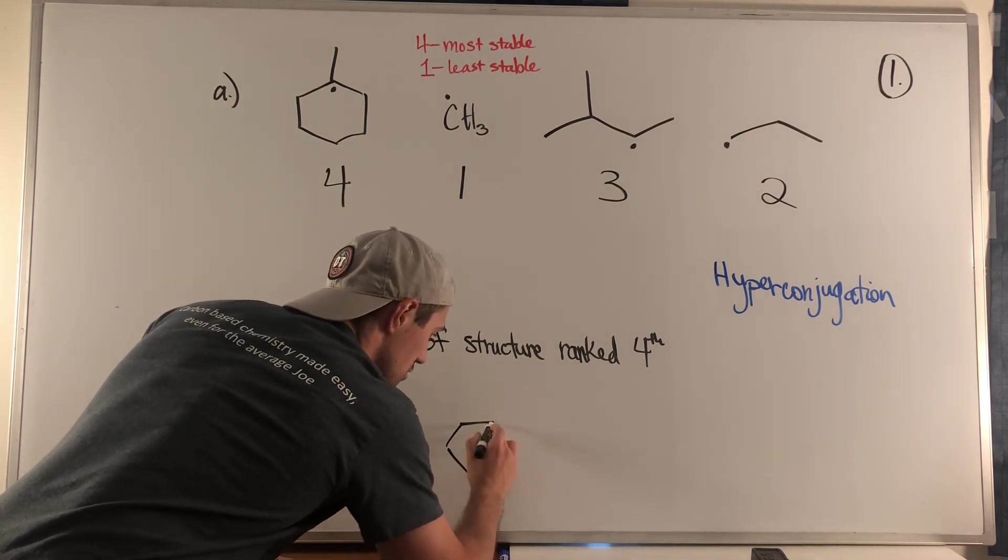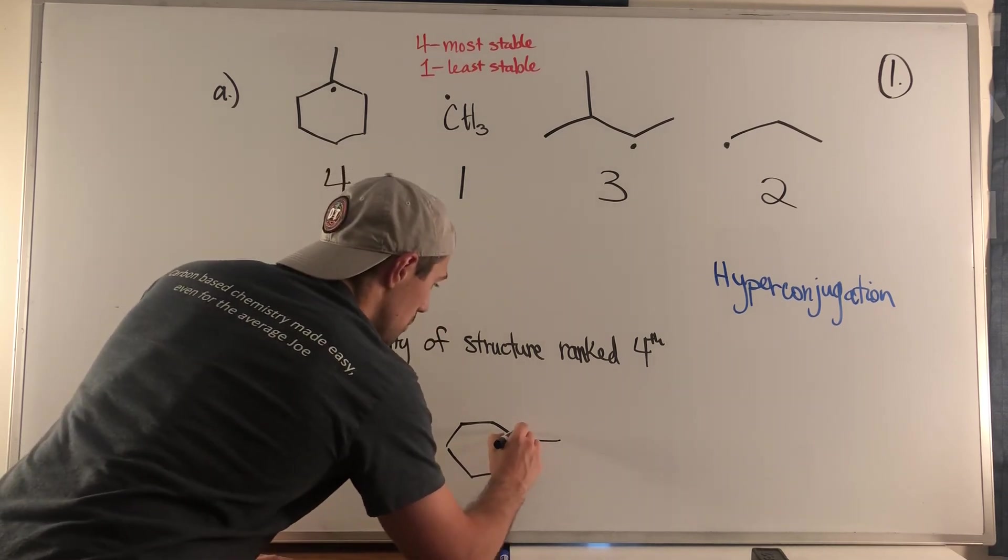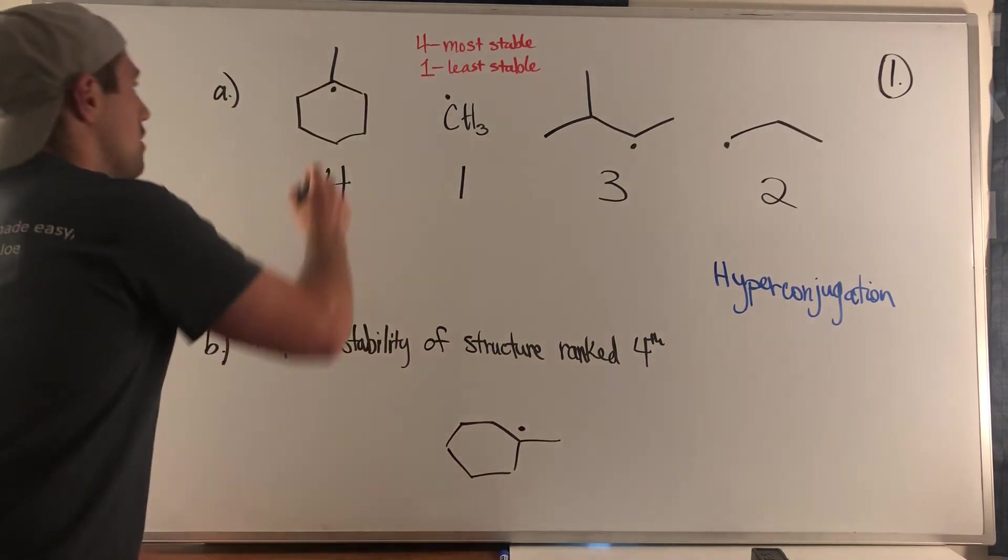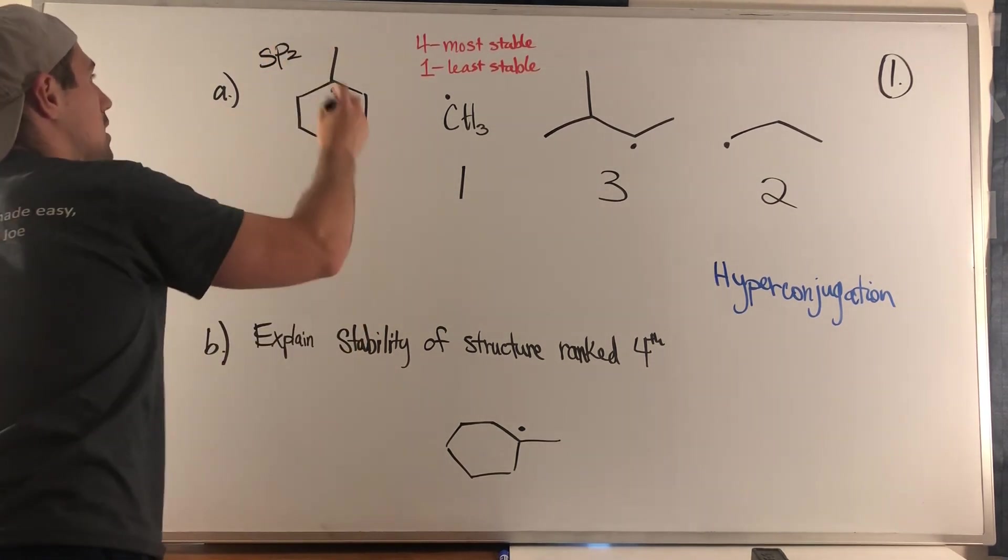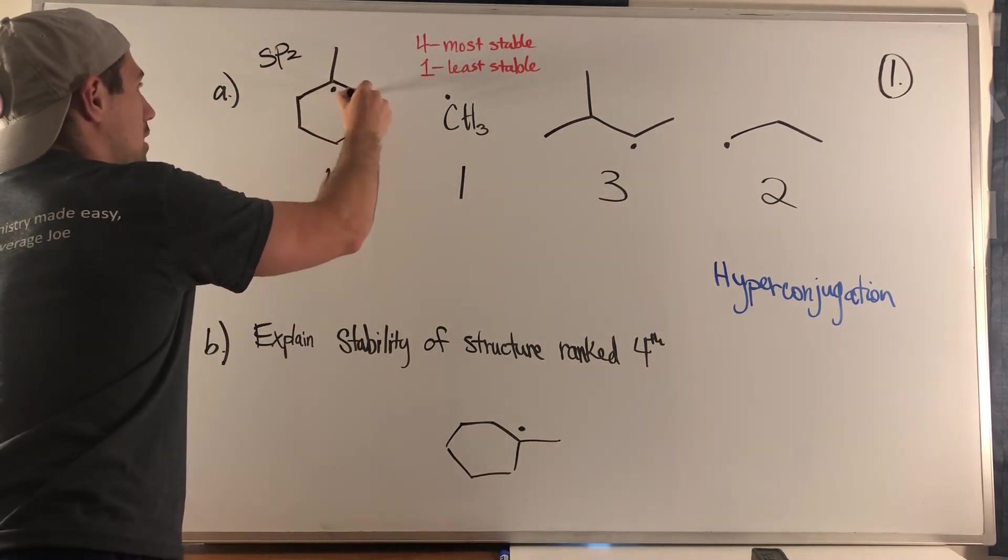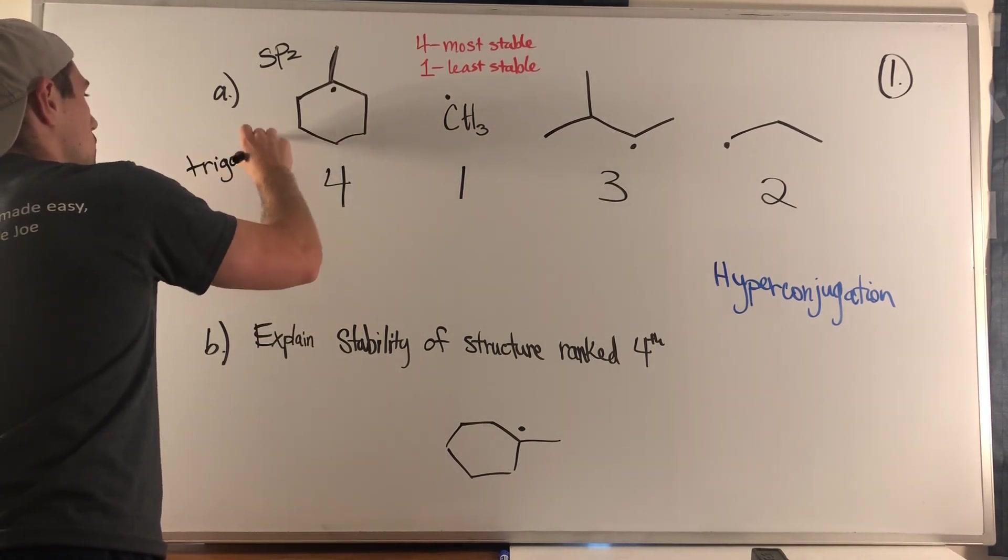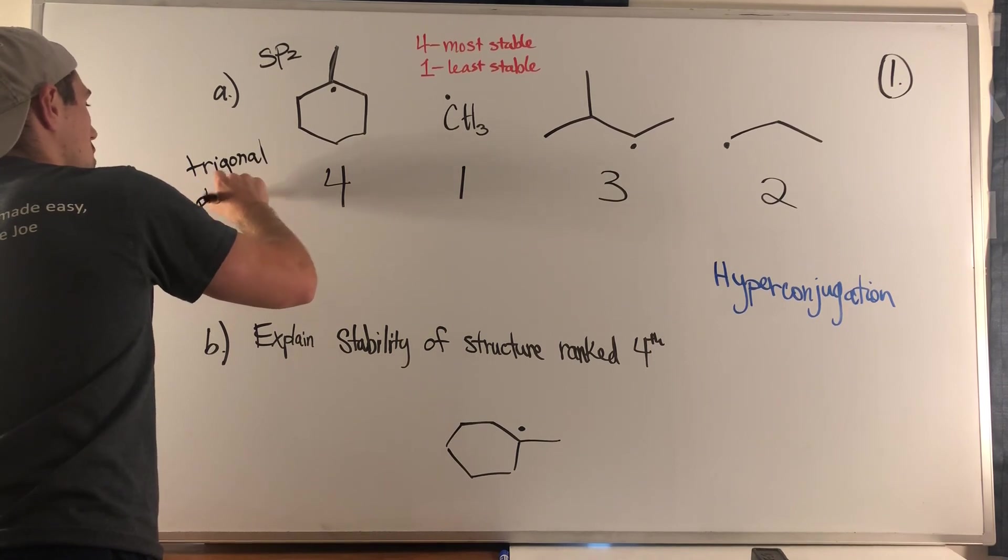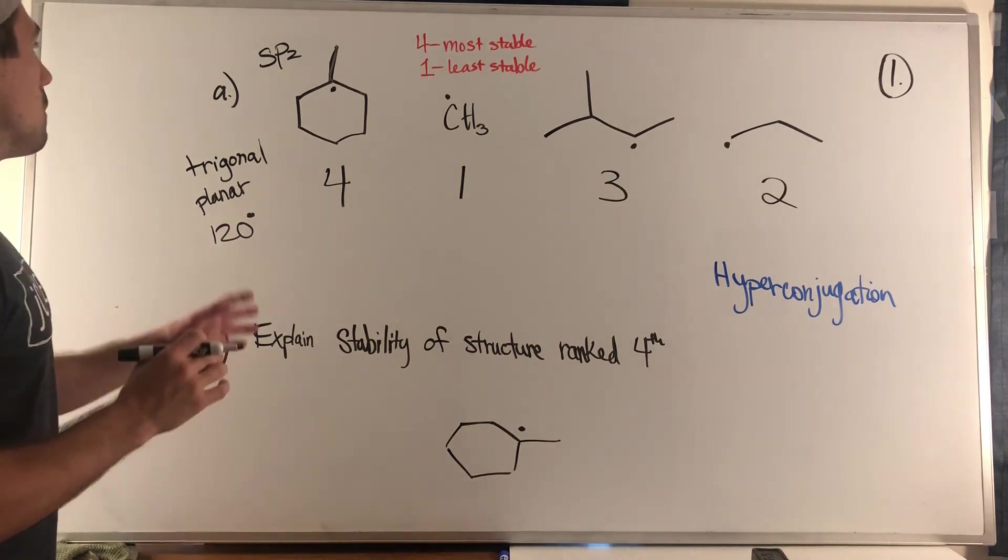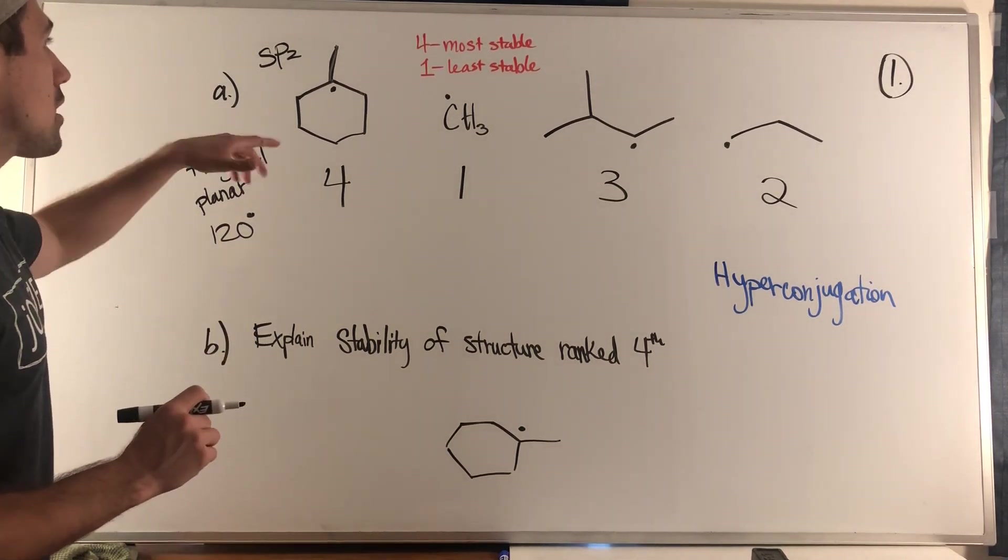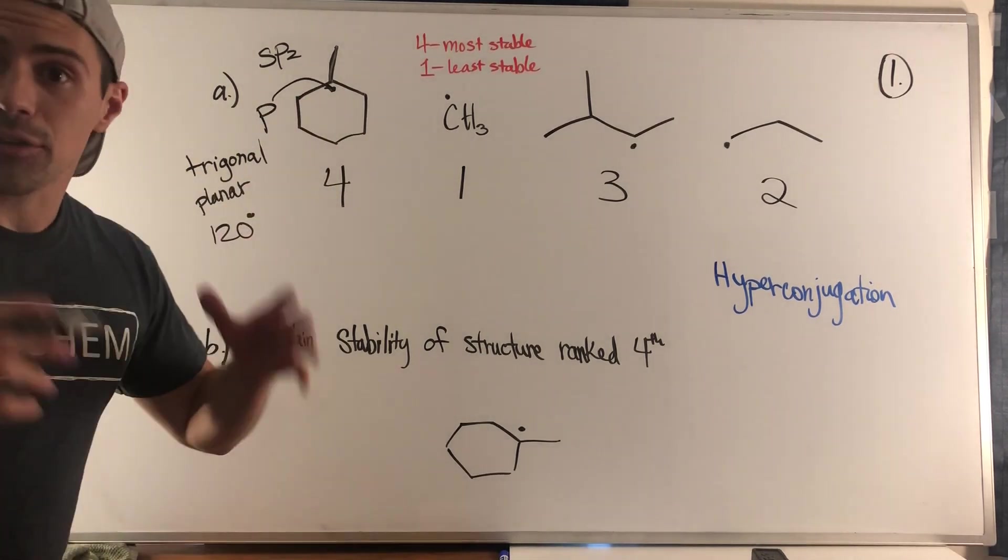So it's because of hyperconjugation. Now what I'm going to do is draw this ring from this perspective. If I were to draw this ring like so, I'm going to put the radical electron right here. So this carbon and radical carbons in general are sp2 hybridized because there's one bonding area, a second bonding area, and a third bonding area. So they are trigonal planar.